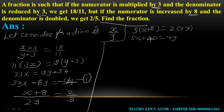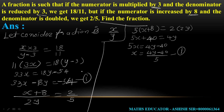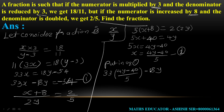Cross-multiplying the second condition gives us 5(x plus 8) equals 2 into 2y, which gives 5x equals 4y minus 40. So x is equal to (4y minus 40) divided by 5. This is Equation 2. Now put this value of x into Equation 1: 33 times (4y minus 40) divided by 5 minus 18y equals minus 54.